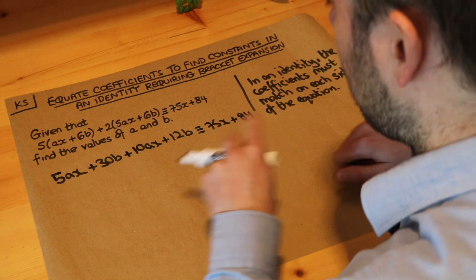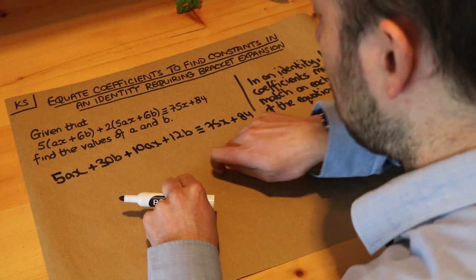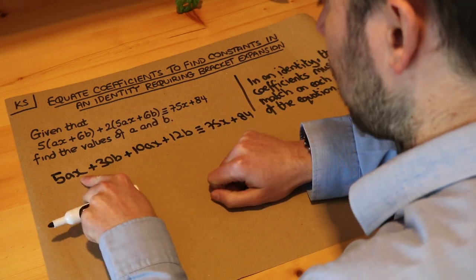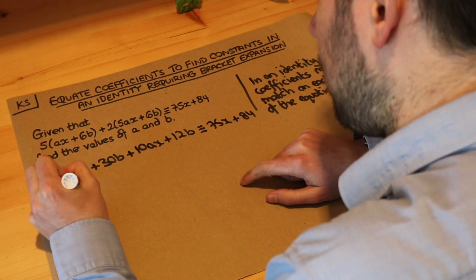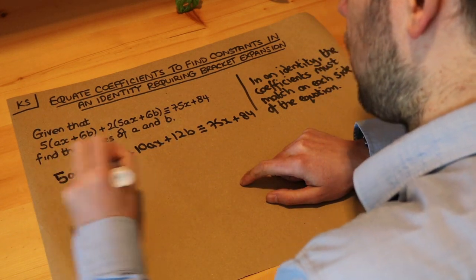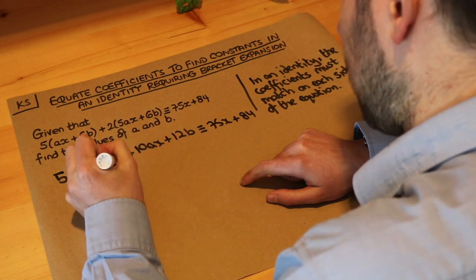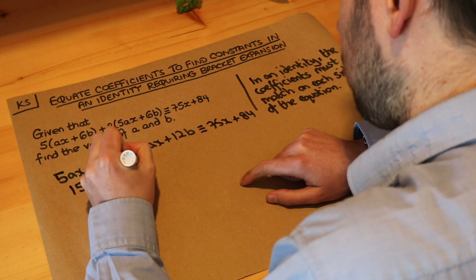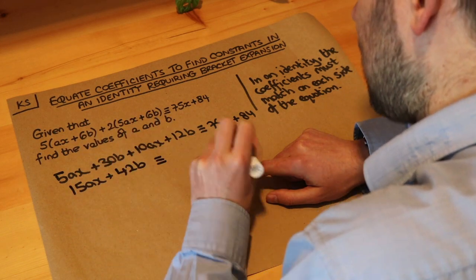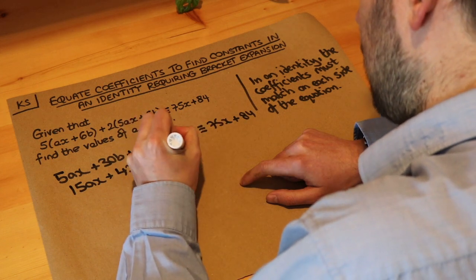Now we could here collect like terms, it might not always be possible, but can you see we've got 5 lots of ax plus 10 lots of ax, that is 15 lots of ax. We've also got 30b plus 12 lots of b, that's 42 lots of b, and that is identical to 75x plus 84.